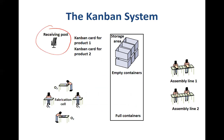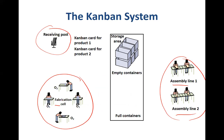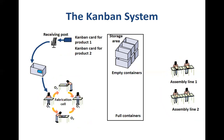This is how a kanban system works. You have a receiving post where cards are placed. There are two different operations: a fabrication cell and an assembly line. There are two assembly lines depending on the product being made. You have a storage area where empty containers are kept at one place and full containers at another. The receiving post has two different types of cards — one for product one and one for product two. It starts with a kanban card for product one being taken from the receiving post and placed on one of the empty containers.